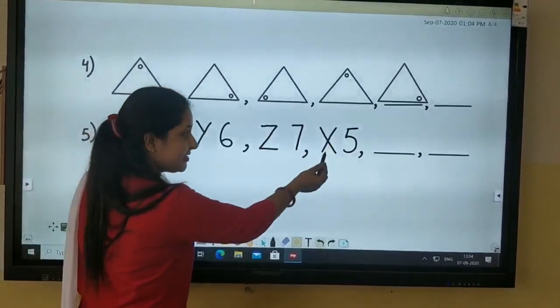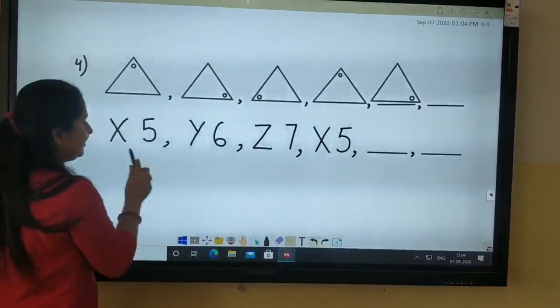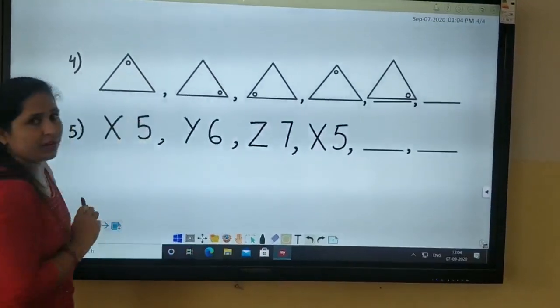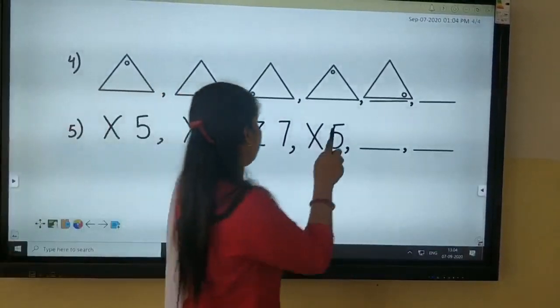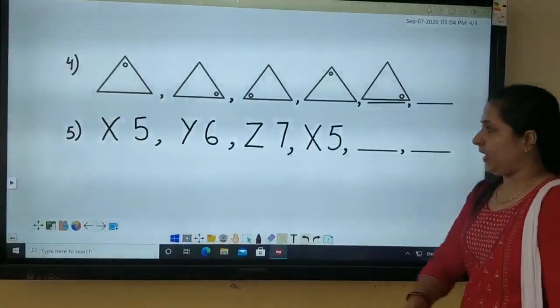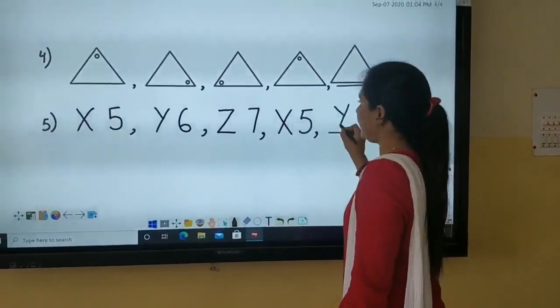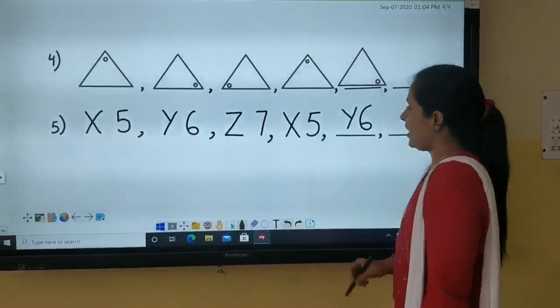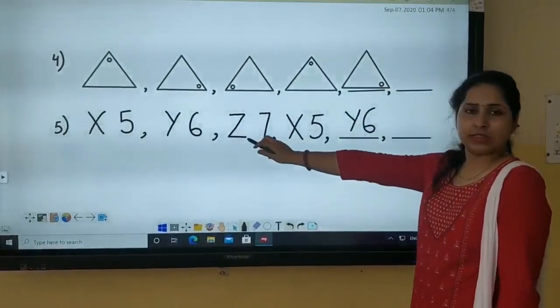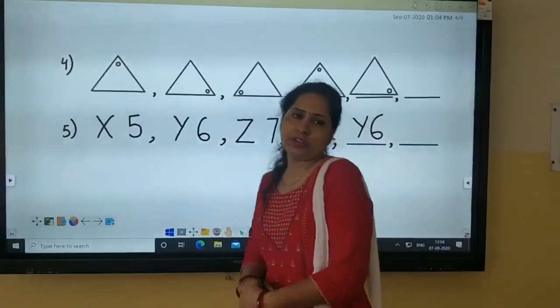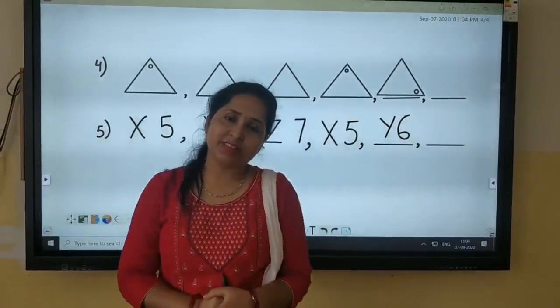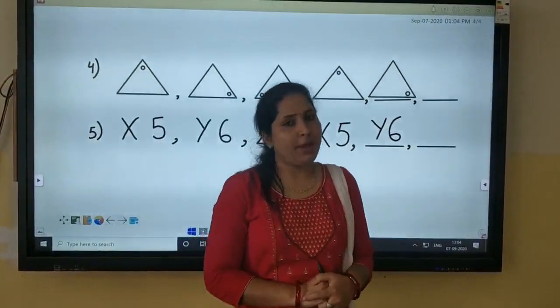So what will come here after X? It will be this one. So you will write Y with number 6. And after Y it will be this. Z with 7. So children these were a few examples based on repeated patterns.